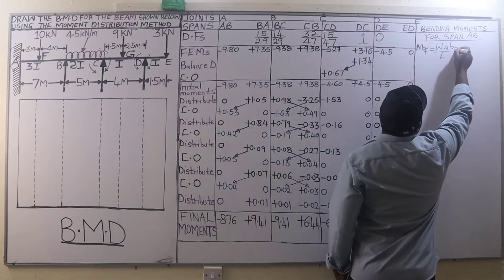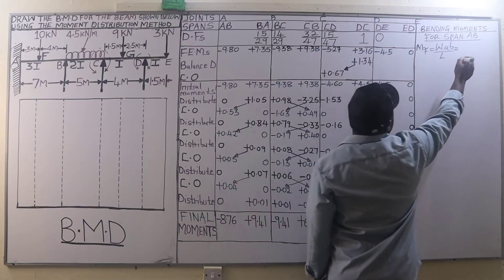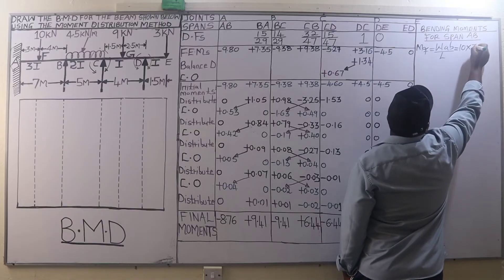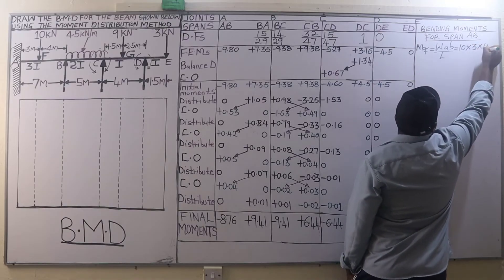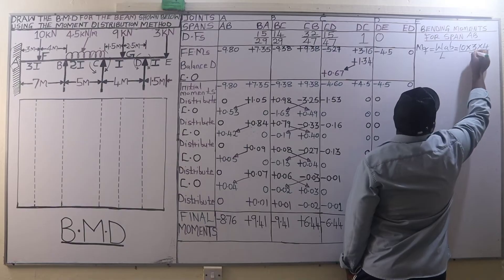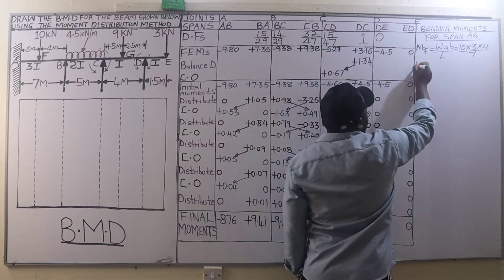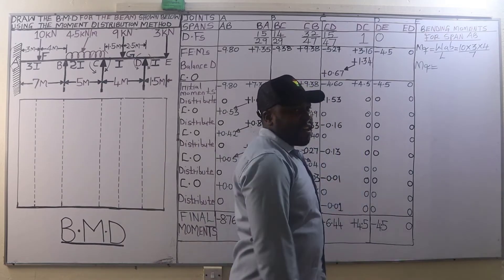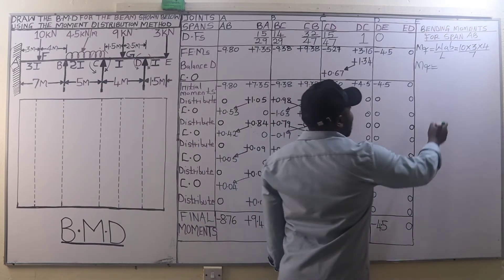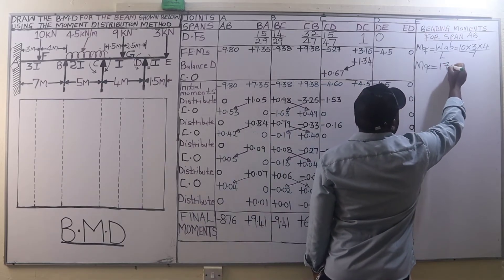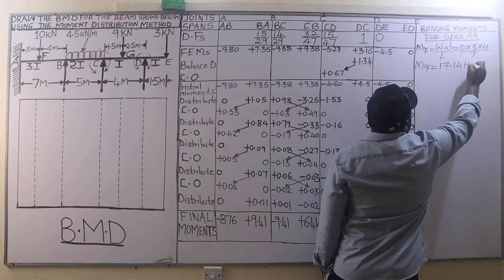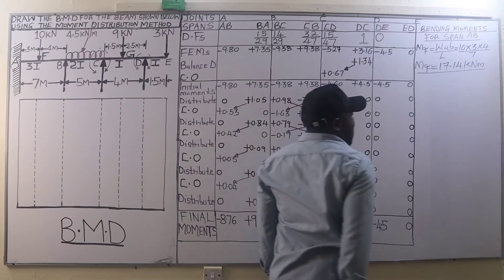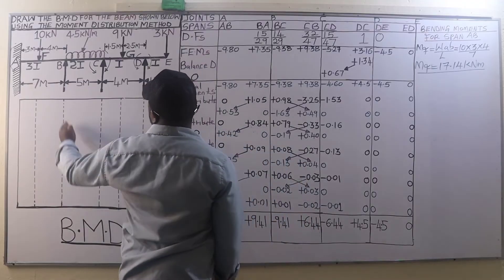The bending moment at F is: W = 10 kN, a = 3 m, b = 4 m, divided by the span L = 7 m. This gives a bending moment at F of 17.14 kilo-newton-metres.